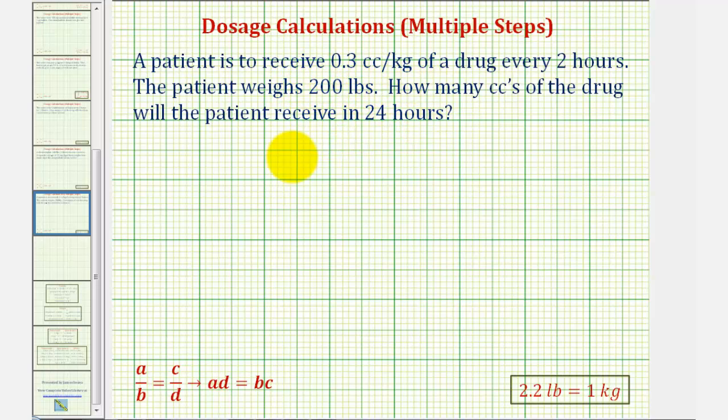We're going to solve this problem using proportions. Looking at the given information, we're going to start with the rate 0.3 cc's per one kilogram.